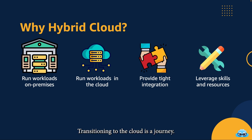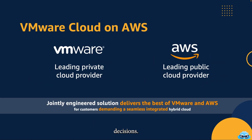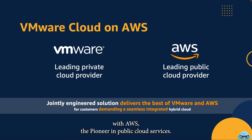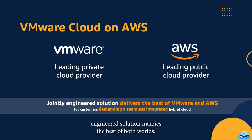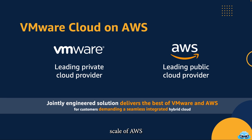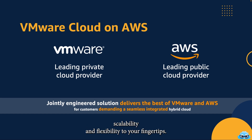Adaptation at your pace: transitioning to the cloud is a journey. A hybrid model lets you move at your own pace — there's no rush to shift everything immediately. Take your time, test the waters, and make informed decisions. Imagine the expertise of VMware, the leader in private cloud solutions, joining forces with AWS, the pioneer in public cloud services. The result? A seamlessly integrated hybrid cloud solution tailor-made for your needs. This jointly engineered solution marries your on-premises infrastructure with the unparalleled scale of AWS. With VMware Cloud on AWS, you're embracing a harmonious collaboration that brings innovation, scalability, and flexibility to your fingertips.